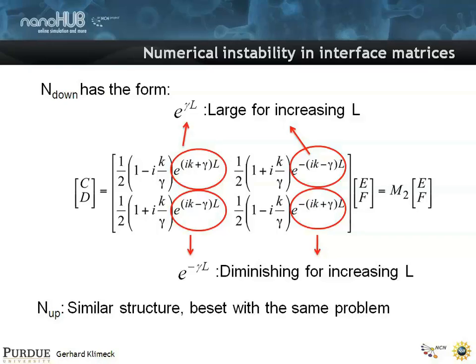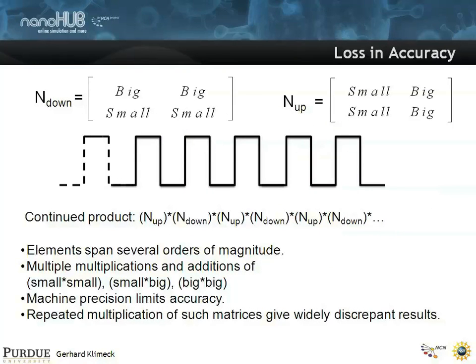Now think in terms of computer and numbers. That means these would be large numbers. These would be small numbers. If you do the same for the down, you see the same thing. So you have, I said big, big, small, small on the previous one. Here you have small, small, big, big. Now you're going to start cascading these things together.